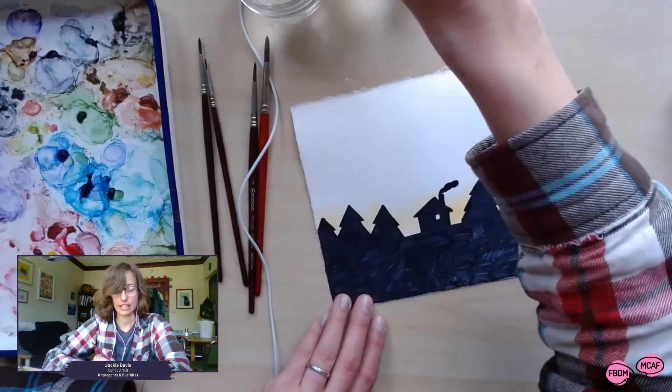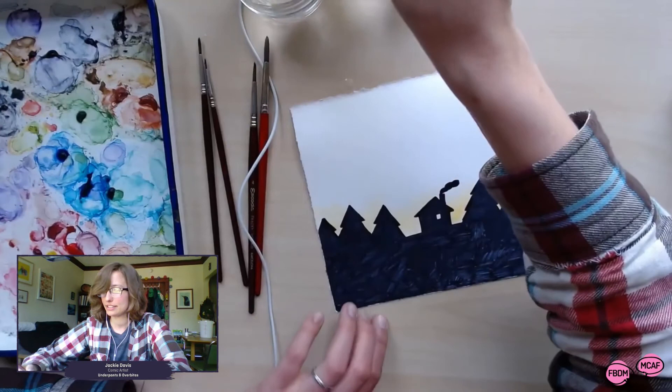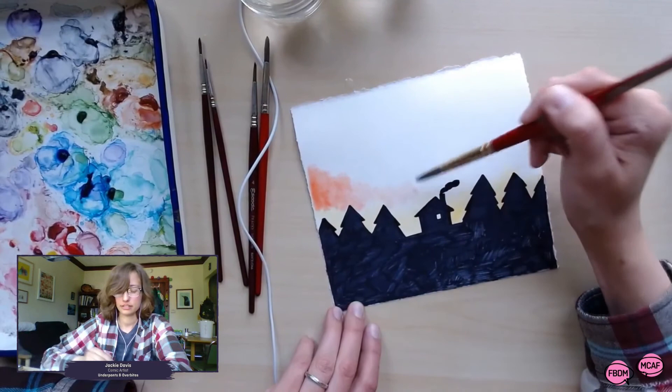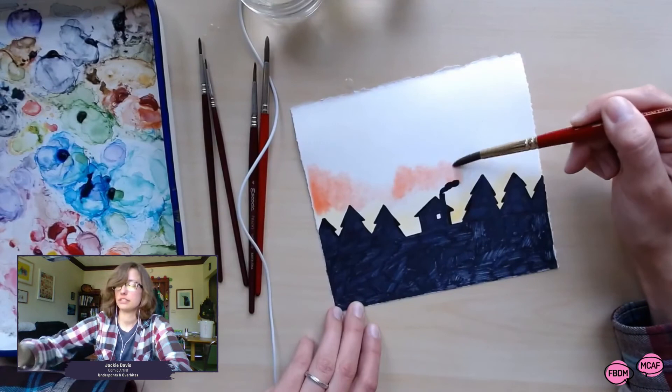So here I'm just getting some orange from my palette. See how the pigment spreads? That's what happens when we wet the paper. I'm gonna add some pink in between here.